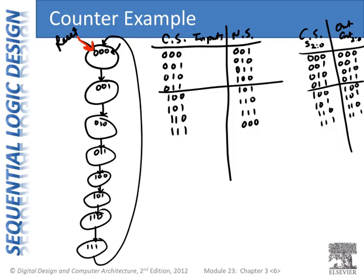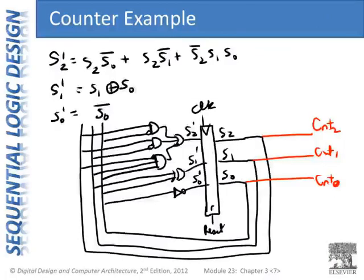As we've shown before, count bit 2 equals state bit 2, count bit 1 equals state bit 1, and count bit 0 equals state bit 0. Now we can use our state transition table to write our next state equations and implement our circuit.